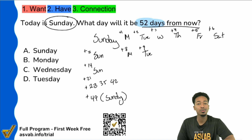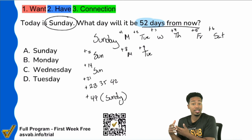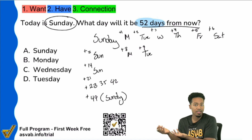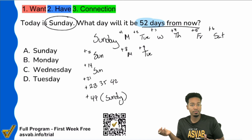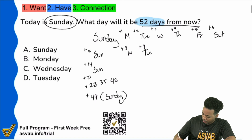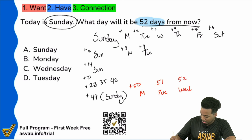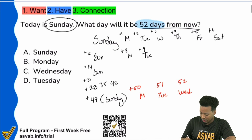All we needed to do was get to the number as close as we can to 52, counting by sevens because we're talking about weeks. So day 50 is Monday, day 51 would be Tuesday, and day 52 would be Wednesday. And that's why the answer here is C.